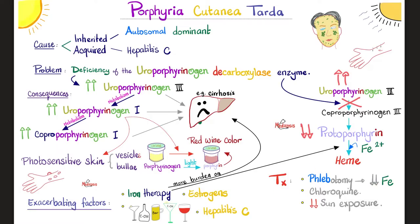How can I manage these patients? If sunlight causes skin problems, try to avoid sunlight. If iron overload is a problem, let's remove some iron from your system through phlebotomy. And for some reason, chloroquine or hydroxychloroquine tends to help patients with porphyria cutanea tarda. All of these are not solutions — because there are no solutions in life, only trade-offs, as Dr. Thomas Sowell said.